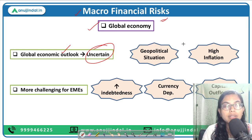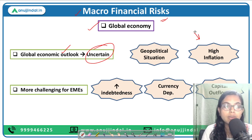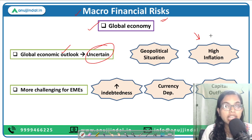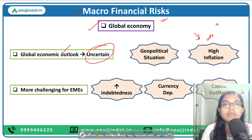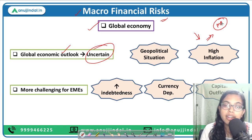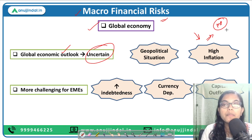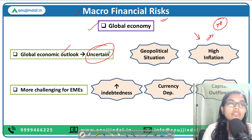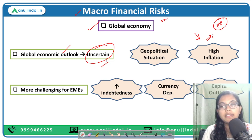Apart from that, the monetary policy normalization done in response to persistently high inflation — not only in India but in other countries as well — and the monetary policy operations being taken up by central banks around the world have imparted more volatility in the market. Thus the global financial outlook has been uncertain.